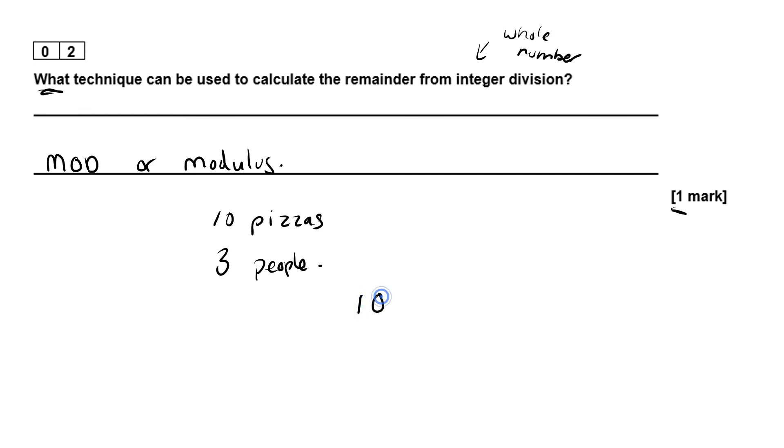Just like the example that we had: if we had 10 pizzas and three people and we wanted to share them, then we could do 10 mod 3. In Python it was that symbol, but mod is the pseudo code for it. So 10 mod 3 would give us the number one, which is the remainder. So mod is the correct answer.